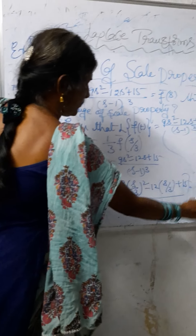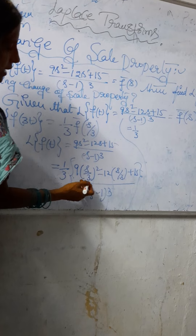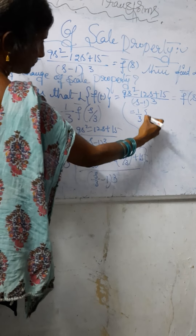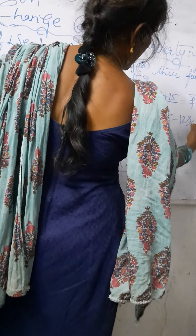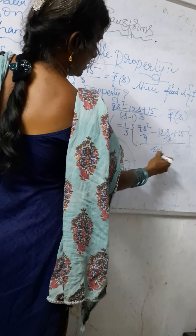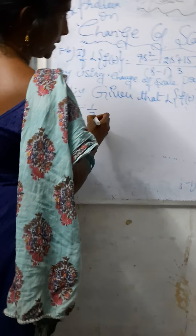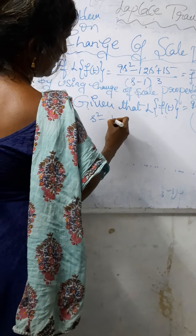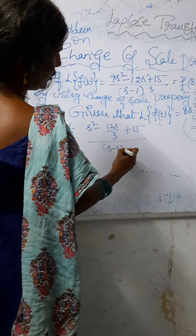Next, we simplify: (1/3) multiplied by [9·(s²/9) - 12·(s/3) + 15] / (s/3 - 1)³. Here 9 and 9 cancel, giving s². We write (1/3) × [s² - 12s/3 + 15] / [(s - 1)³/27], since (s/3 - 1)³ = (s - 1)³/27. This gives (1/3) × (s² - 4s + 15) × 27 / (s - 1)³.